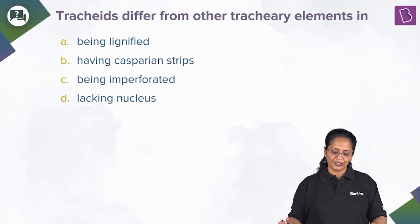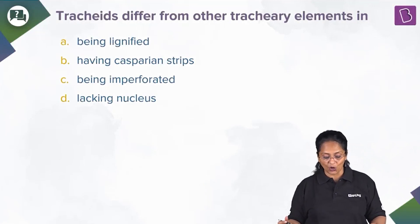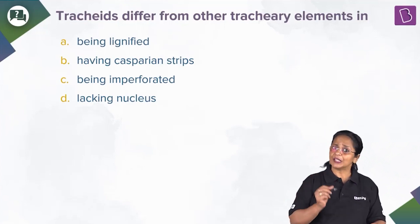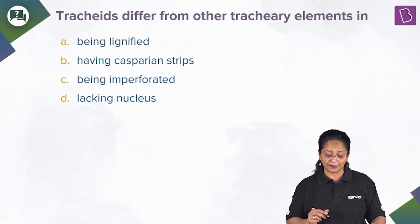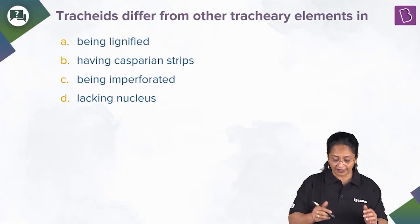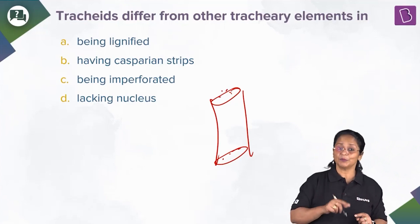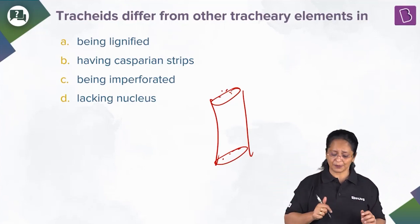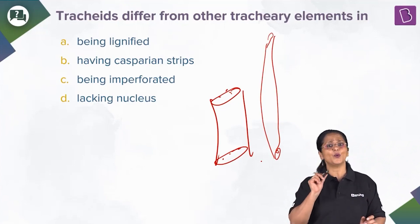Let us now solve this question: tracheids differ from other tracheary elements in being lignified, having casparian strips, being imperforated, or lacking a nucleus? Tracheids are components of xylem tissue. The difference between tracheids and other tracheary elements is that tracheids are narrow and long with tapering ends. Vessels are broader with an end plate that is perforated — this perforation is absent in tracheids. Both have lignified cell walls with small openings called pits.